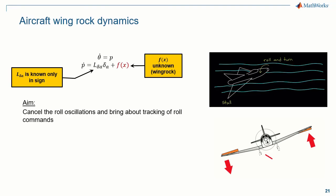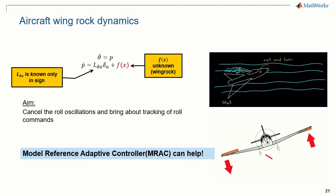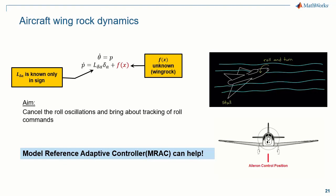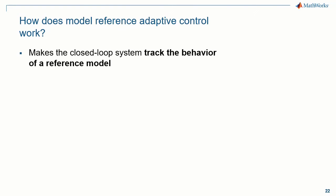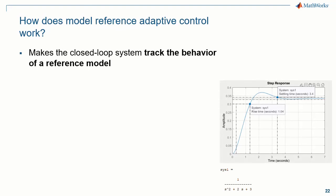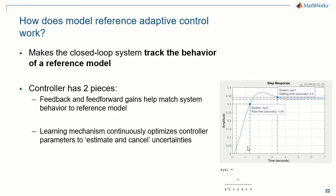In this kind of scenario, an adaptive controller will come in handy — specifically model reference adaptive control. This controller brings about a model-matching behavior where it can make the closed-loop system track the behavior of a reference model. A simple example would be making your system track a second-order system. There are two pieces of the MRAC that help with this: feedback and feed-forward gains that help match the system behavior to the reference model, and a learning mechanism that continuously optimizes the controller parameters to estimate and cancel the uncertainties — the roll oscillations in the aircraft.